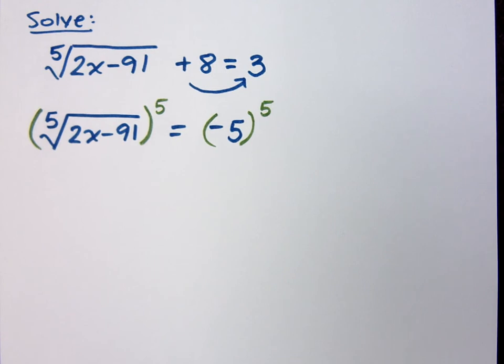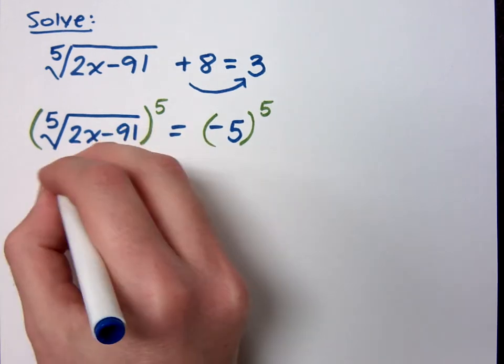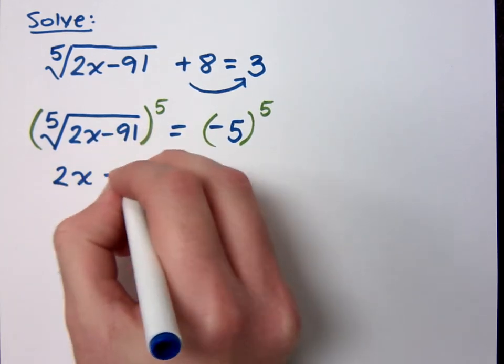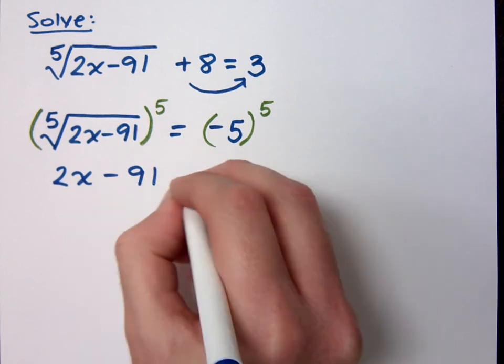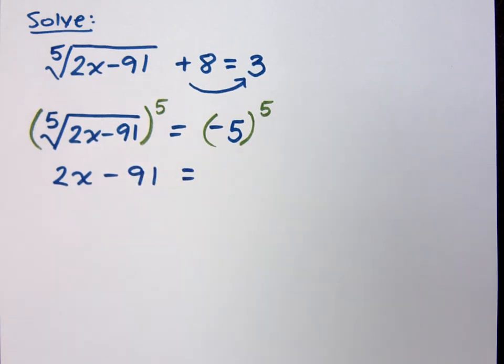So what does that give me on the left? 2x minus 91. 2x minus 91 equals, man, I wish I had that power sheet.